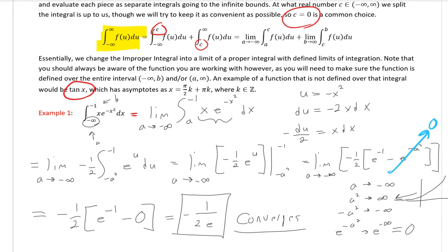So we're still using the same methods we've used up to this point — applying u-substitution, integration by parts, whatever we need to solve the integral. The only thing we're adding is the limit out front, and then evaluating that limit to think about what happens to the expression as we approach whatever infinite bound.